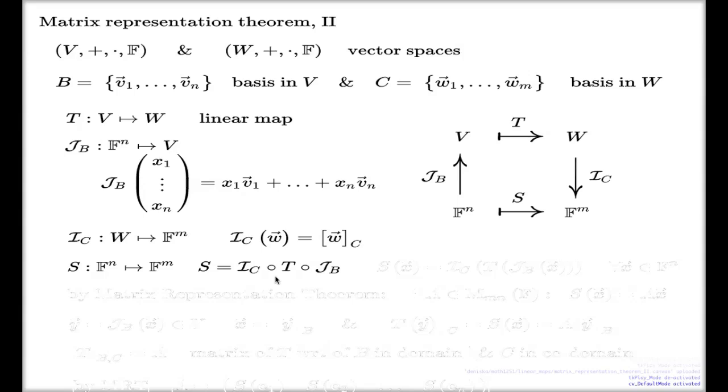I can give you the very expressed version of how S acts. The way we expand composition, we do this: x from Fⁿ is first taken by J_B here, then taken by T into W, and then taken by I_C to Fᵐ. That's how my S works.